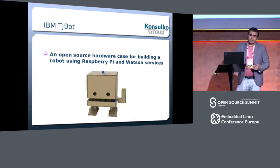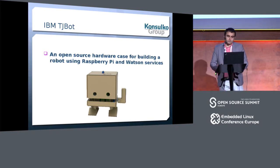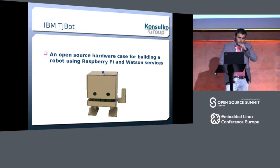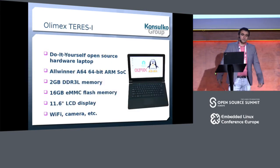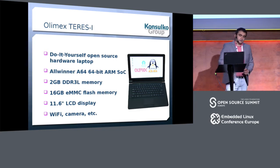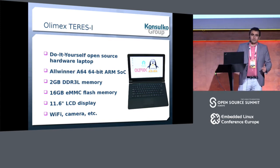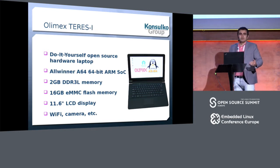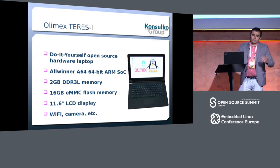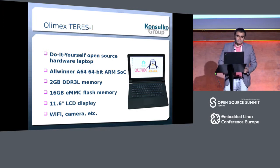Another example is the IBM TJ Bot, released this year — a friendly robot you can build, put on your desk and talk with it for simple tasks. Olimex Teres One is a do-it-yourself laptop; Olimex is a company based in Bulgaria, my hometown. Just two days ago on Saturday they released it on the market. At the workshop everyone was able to assemble a laptop with bare hands in about 90 minutes. It was a fantastic experience.